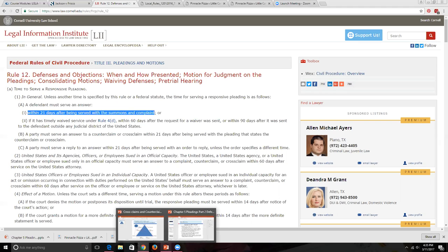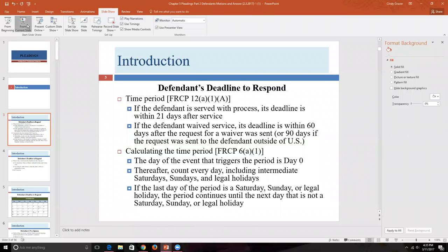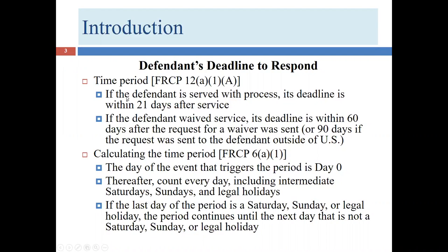So those are the two time options depending on whether waiver is done or not. How do we calculate those periods? For any deadline under the federal rules, the date of the event counts as day zero—not day one. The day after the event is day one. We count every day including Saturdays, Sundays, and legal holidays.